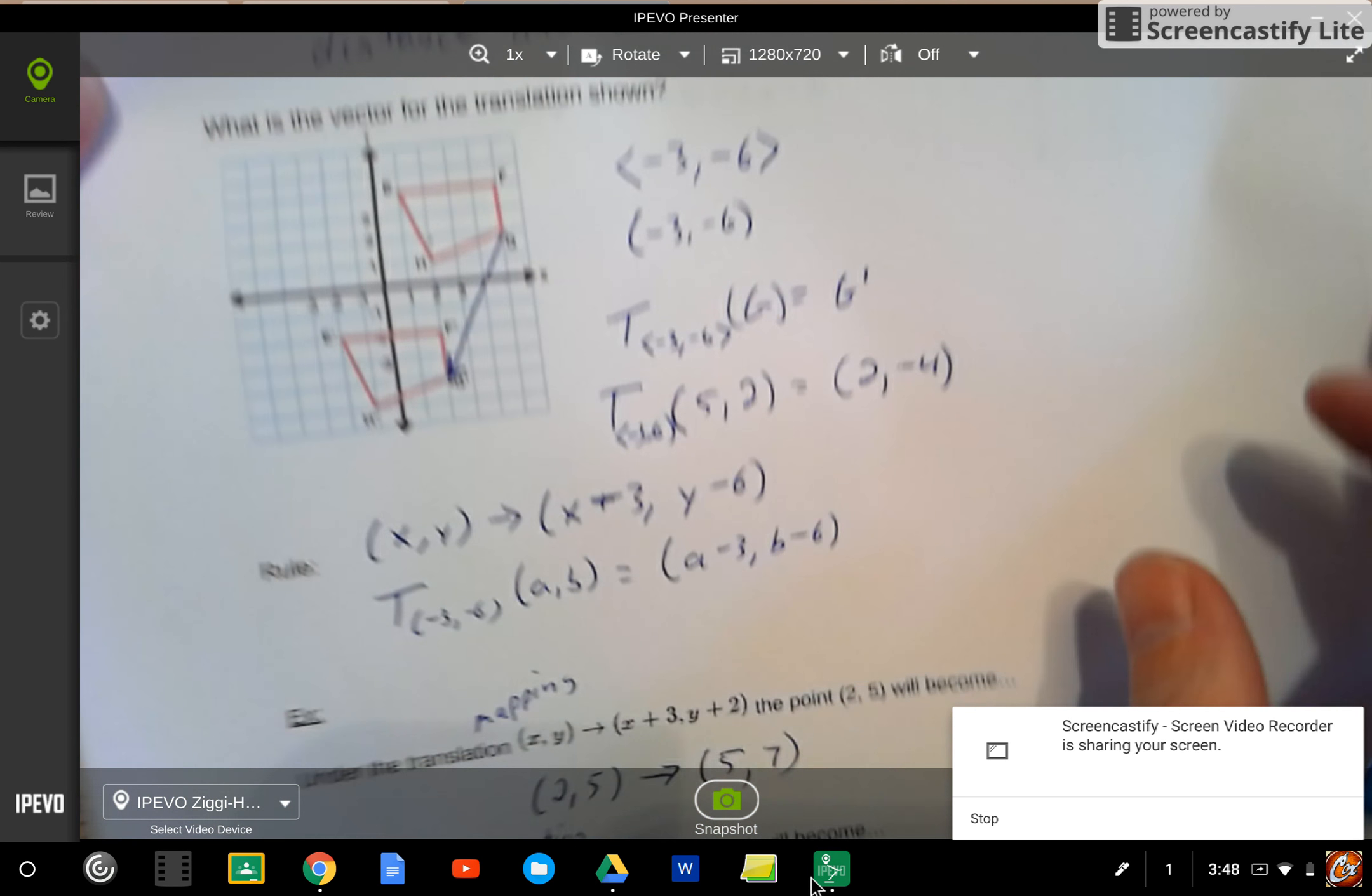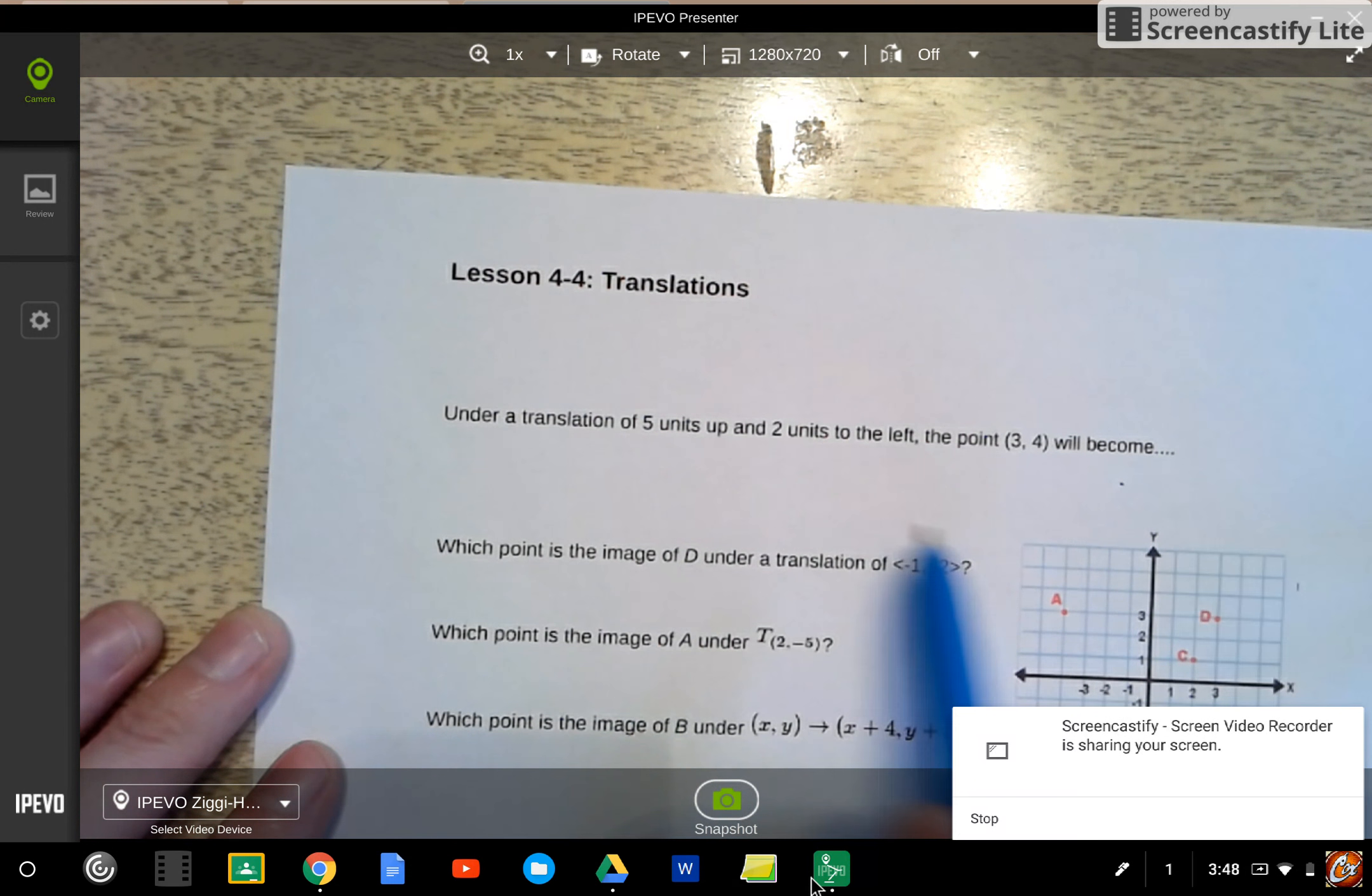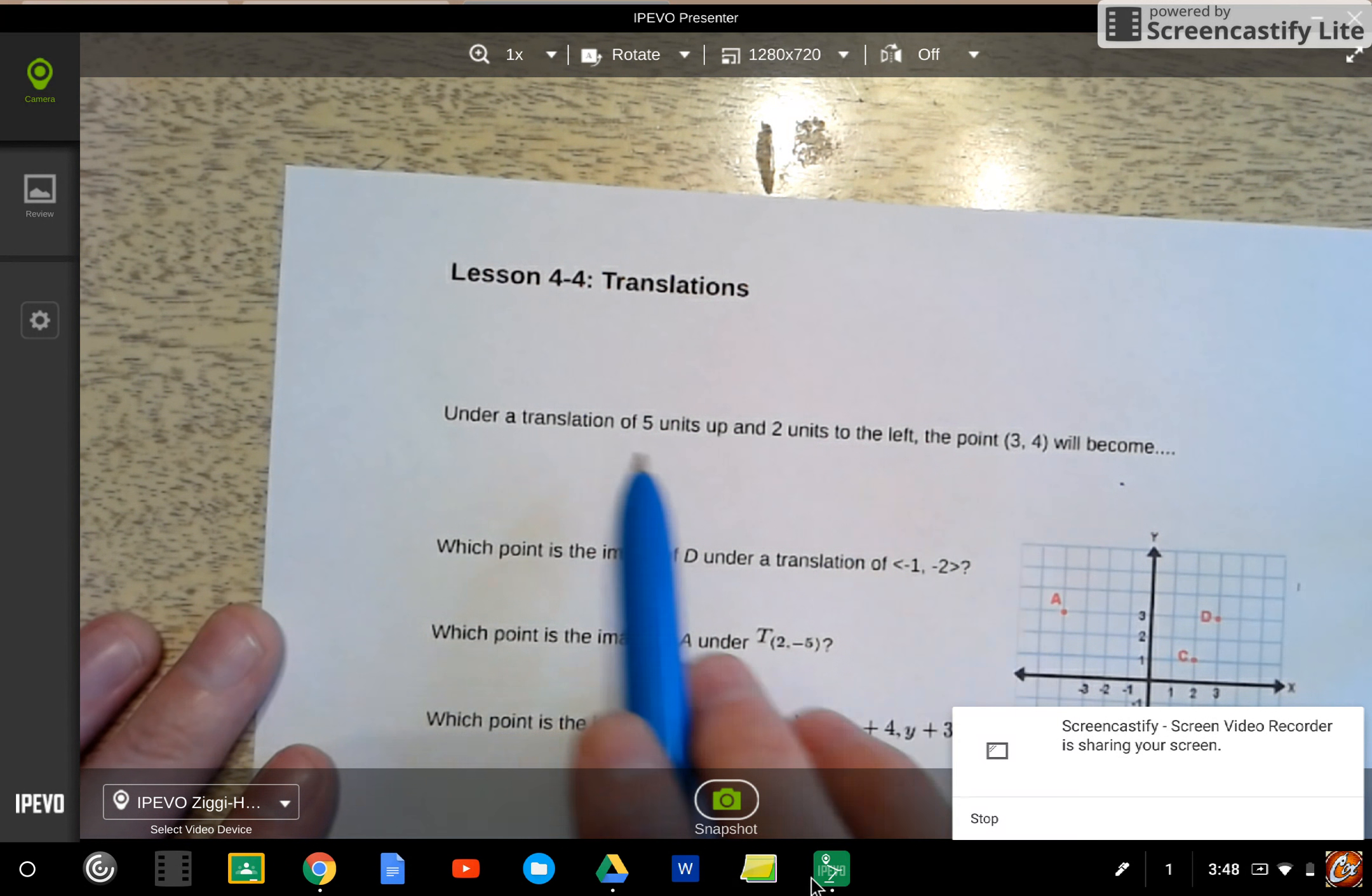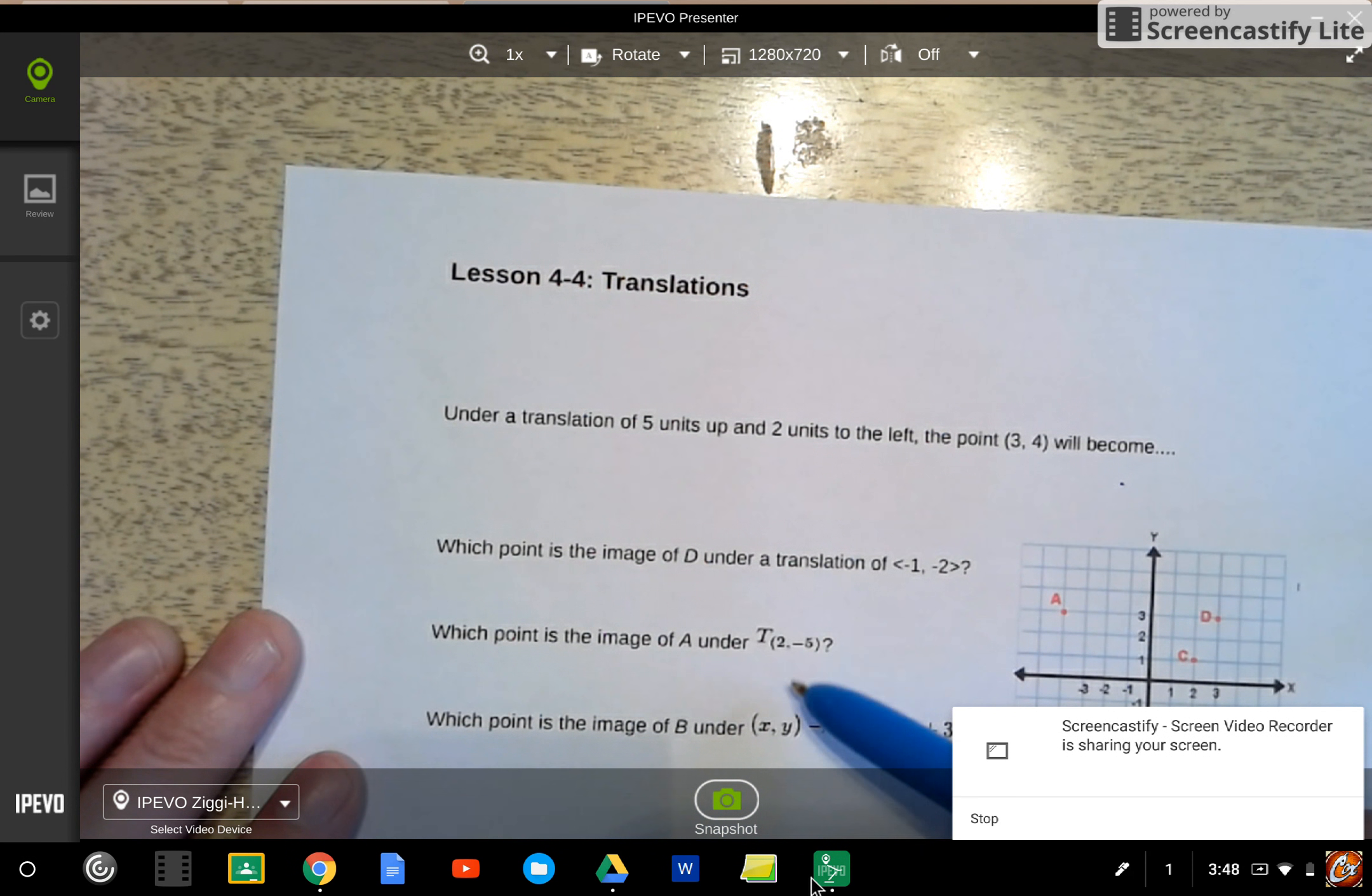So let's try some on your own. Here's a few problems you want to try on your own. Where does this point go to after 5 units up and 2 units to the left? And then for these, if I take d and move it along that vector, what point will it be at? So for these three, you're going to give me the name of the point. Take a shot at this real quickly.